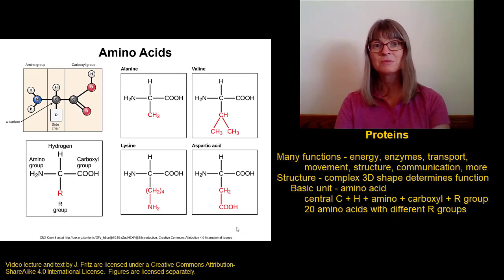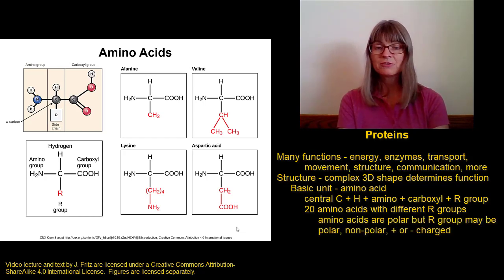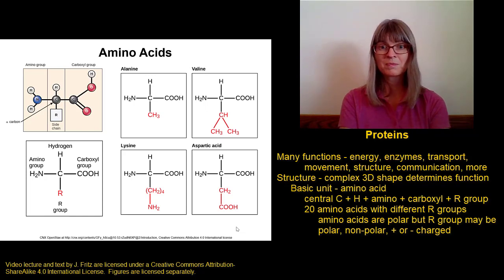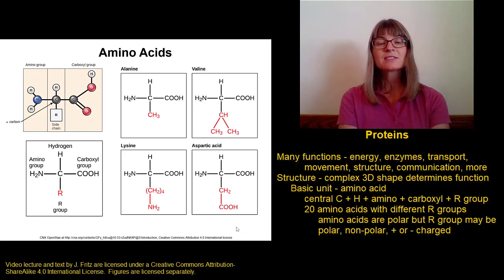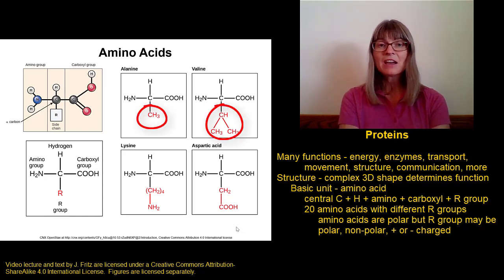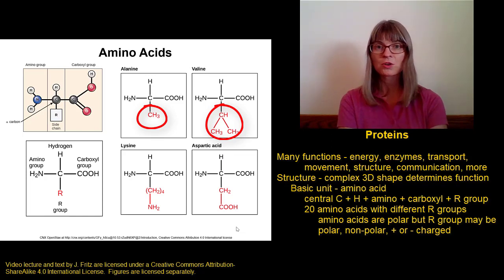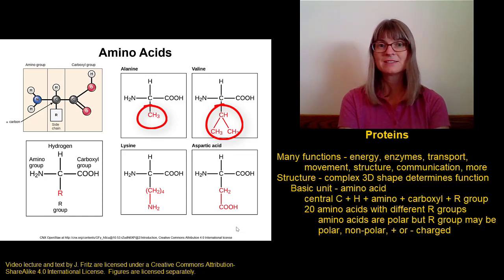We classify amino acids based on the properties of their R groups. All amino acids are relatively polar because they all have that amino group and that carboxyl group, but we look only at the R group when we're trying to classify amino acids. Some amino acids are called nonpolar amino acids because they have nonpolar R groups. For example, shown here are alanine and valine. These have R groups that contain only carbons and hydrogens, and things that are only carbons and hydrogens are nonpolar.